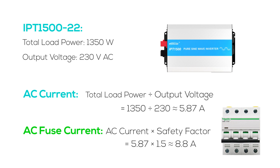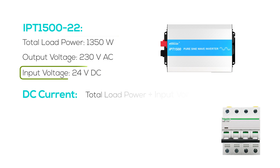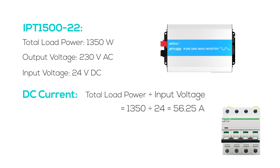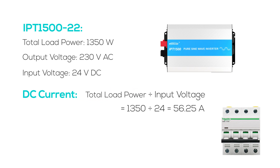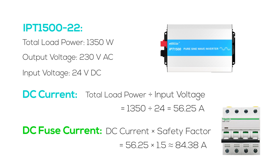Note that when calculating the AC fuse current, the safety factor for copper conductor can be chosen within the range of 1.3 to 1.5 based on actual conditions. On the DC side, with load power at 1350 watts and system voltage at 24 volts, the DC current works out to 56.25 amperes — total load power divided by input voltage. For the DC fuse, we recommend one that can handle 84.38 amperes. For DC circuits, select a safety factor for copper conductor between 1.5 and 2, guided by specific application conditions.